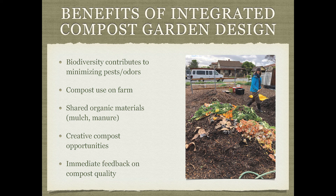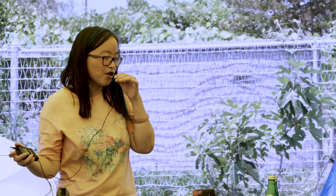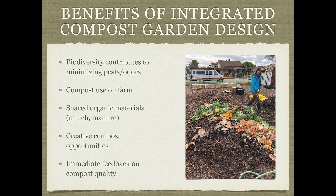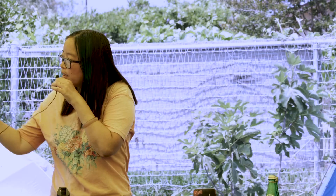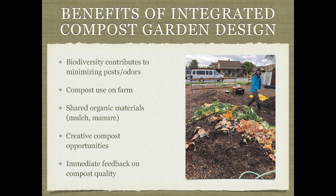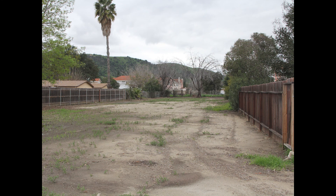The biodiversity of the garden helps minimize pests and odors in your compost. You can use the compost on the farm and share organic materials like mulch and manure on site, which also contributes to diversion statistics if you're diverting those materials from the landfill. There's more opportunity for creative composting integrated into garden beds — burying worm compost in a garden bed, burying compost in the center circle of a keyhole bed, or trench worm composting. You also get immediate feedback on how well your compost is doing by observing how well your plants and vegetables are growing.